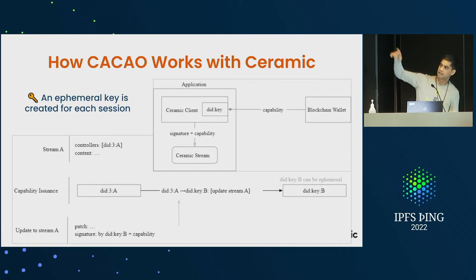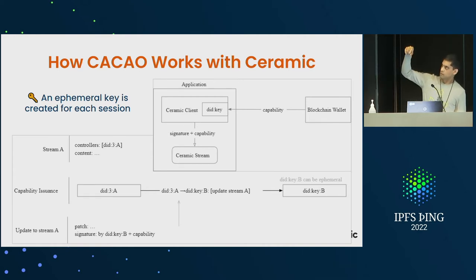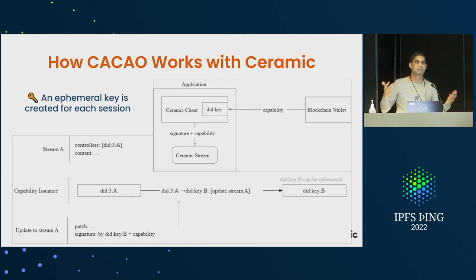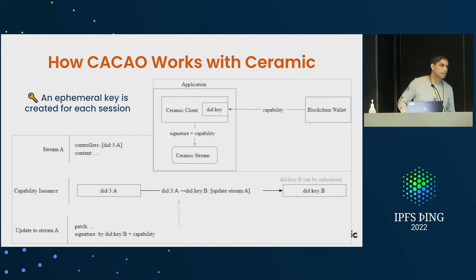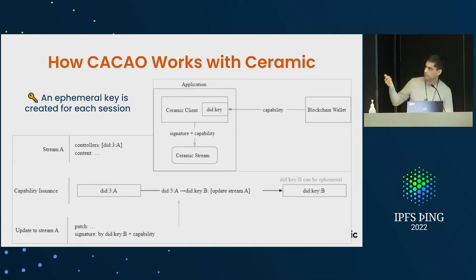Thereafter, when the protocol processes any updates to that user's data, the owner of the DID would authorize this, and any updates made to their content would be verified by looking at the CACAO. Like JWTs, you'd have time limitations — CACAO would expire after a certain time. I believe UCAN has the same expiration features. The issuer is the blockchain wallet holder, and the audience would be the application.